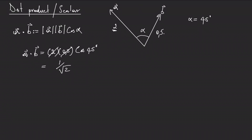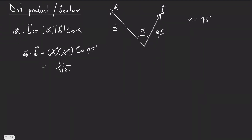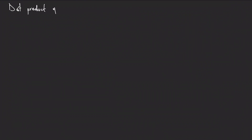Before we get there, let's consider some dot products of special vectors. Let's consider the dot products of unit vectors first.